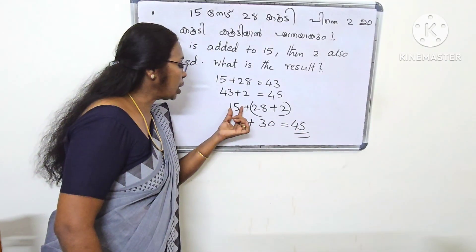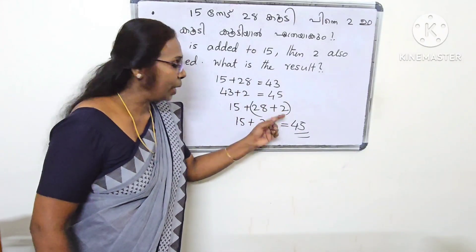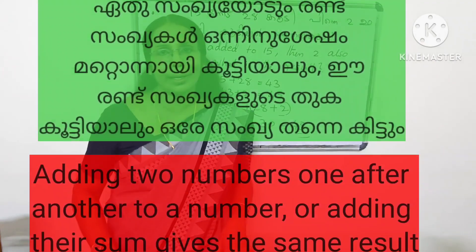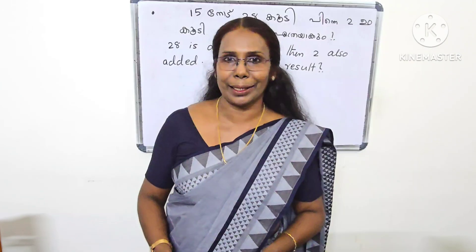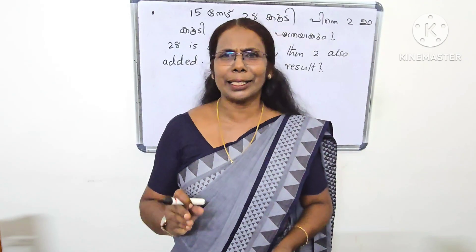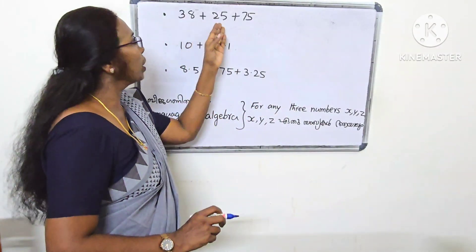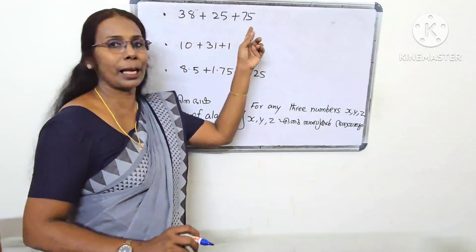If you want to add one thing, you can add one thing. Adding two numbers one after another to a number, or adding their sum, gives the same result. Let's take a look at the example: 38 plus 25 plus 75.